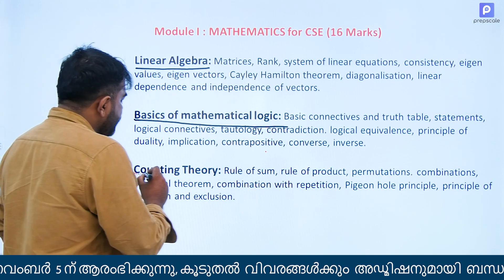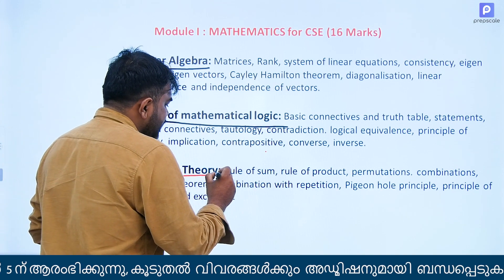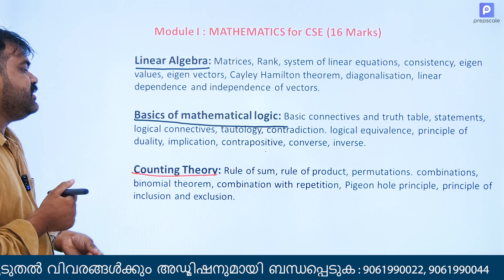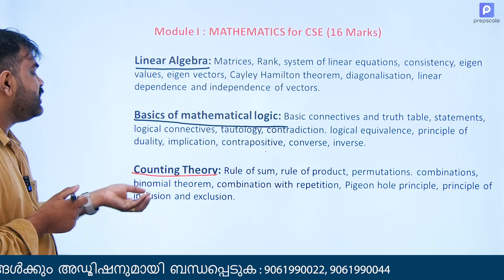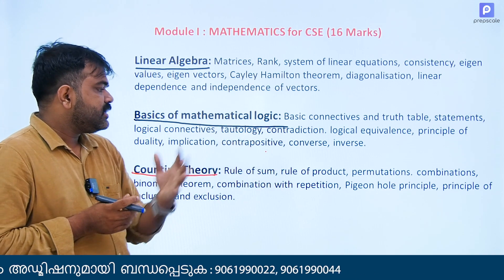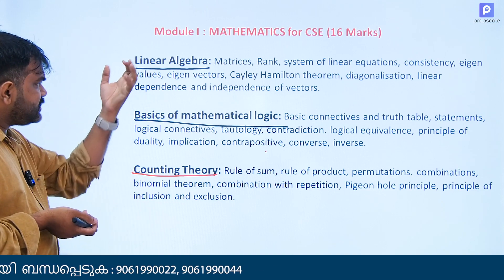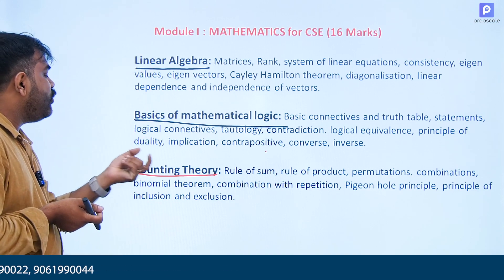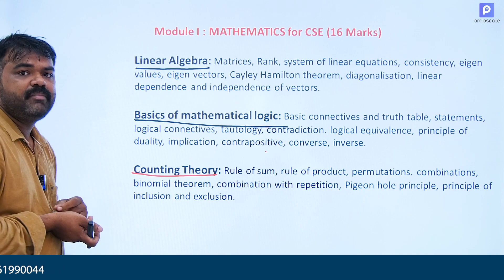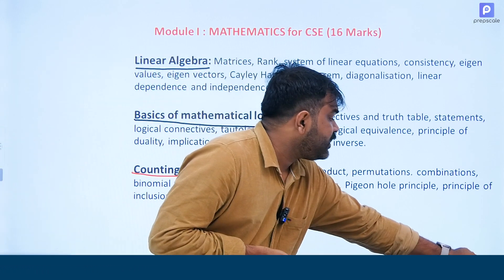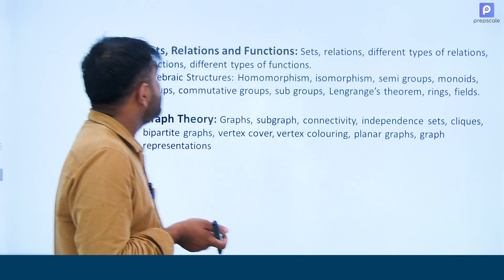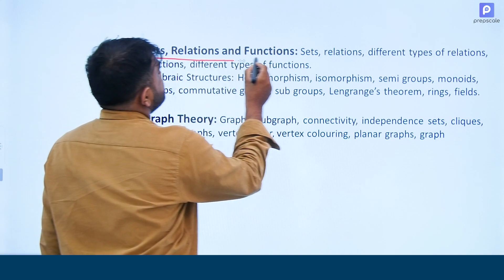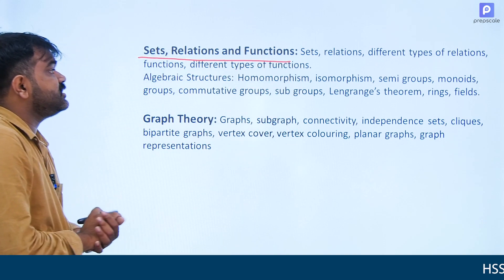Counting Theory is the third part: rule of production, combination, binomial theorem. The fourth part is Set, Relation and Functions — set, relation and function.